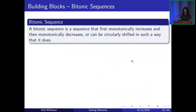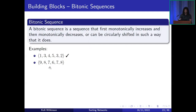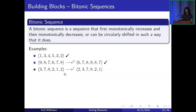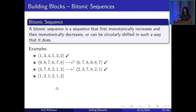Now I'll look at bitonic sequences, which will be important in upcoming proofs. A bitonic sequence is one that first monotonically increases and then monotonically decreases, or one that can be circularly shifted to achieve this. For example: a sequence that increases then decreases passes directly. A sequence that decreases then increases can be right-shifted to become bitonic. A sequence with two increases and one decrease can be shifted one place to become a single increase followed by a decrease. However, a sequence with multiple alternating increases and decreases cannot be made bitonic by any circular shift.